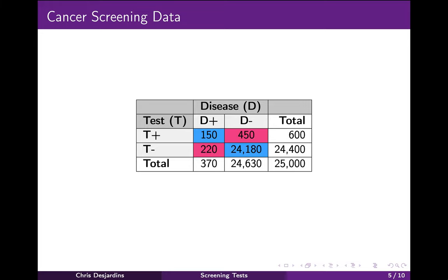Notice that this test isn't perfect. Many of the people were correctly classified. The 150 people with cancer who tested positive are called true positives, because they tested positive correctly — they really did have cancer. The 24,180 people without cancer who tested negative are called true negatives, because they tested negative correctly — they really were cancer-free. However, a substantial number of people were misclassified. The 220 people with cancer who tested negative are called false negatives, because they tested negative incorrectly — they really had cancer and the test missed it. The 450 people without cancer who tested positive are called false positives, because they tested positive incorrectly — they really do not have the disease.